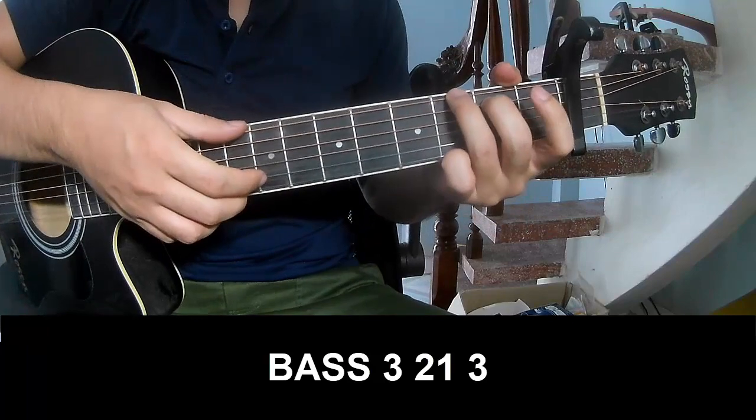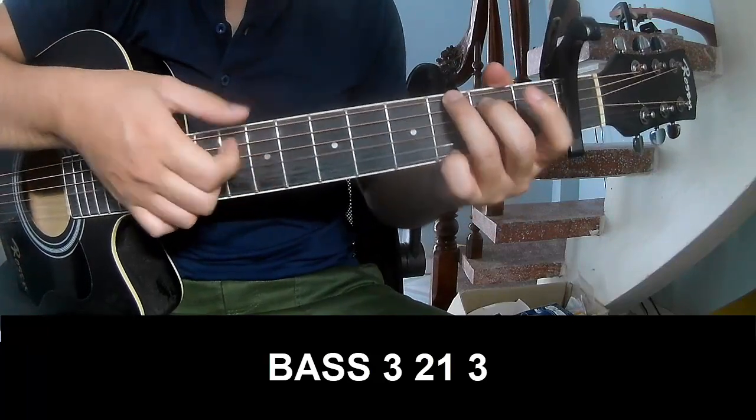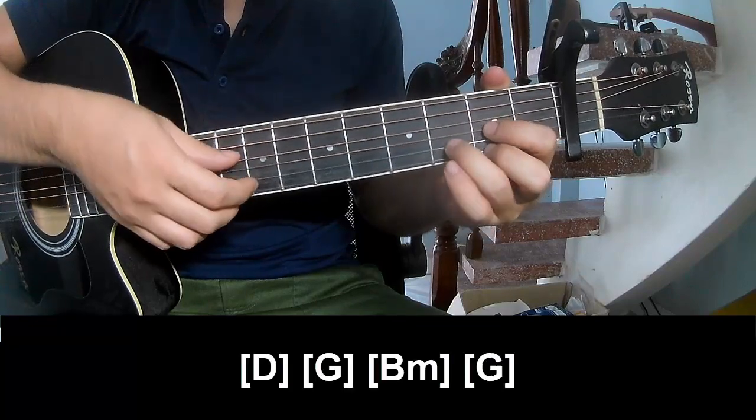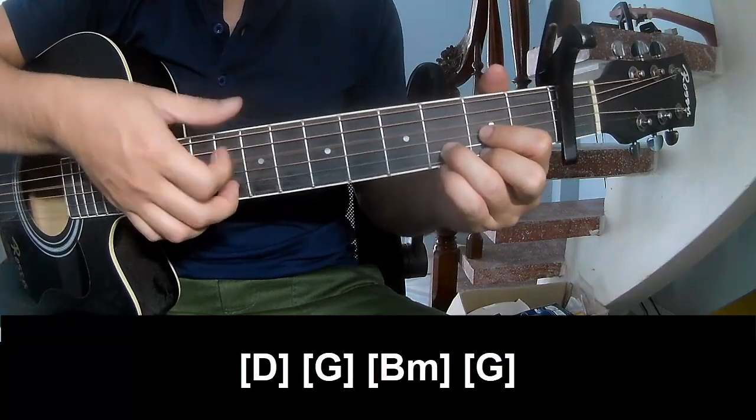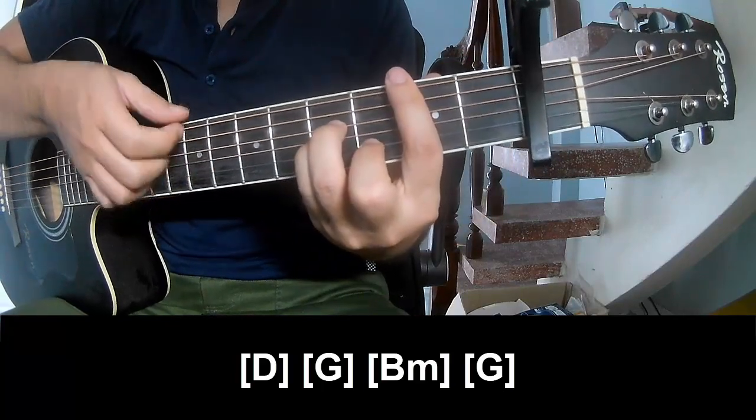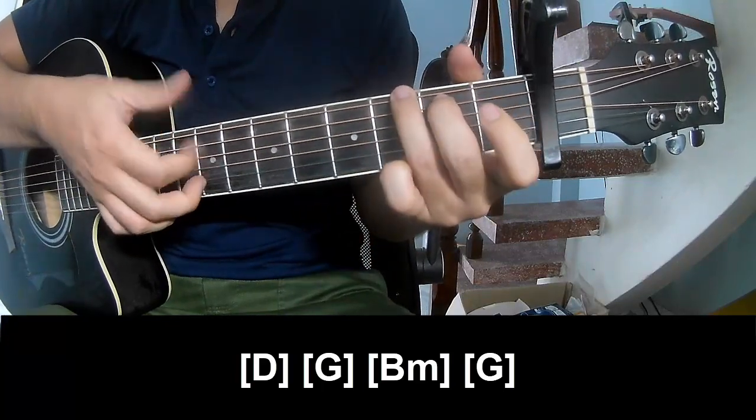First you play the bass pattern: three-two-one-three, three-two-one-three. And you play along with the chords D, G, Bm, and G.